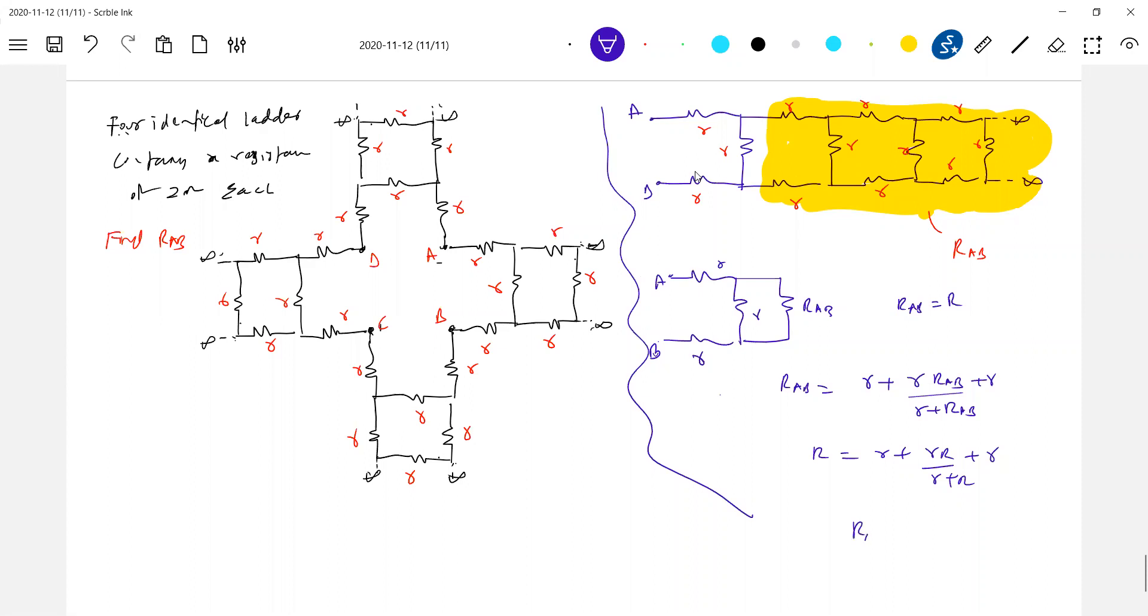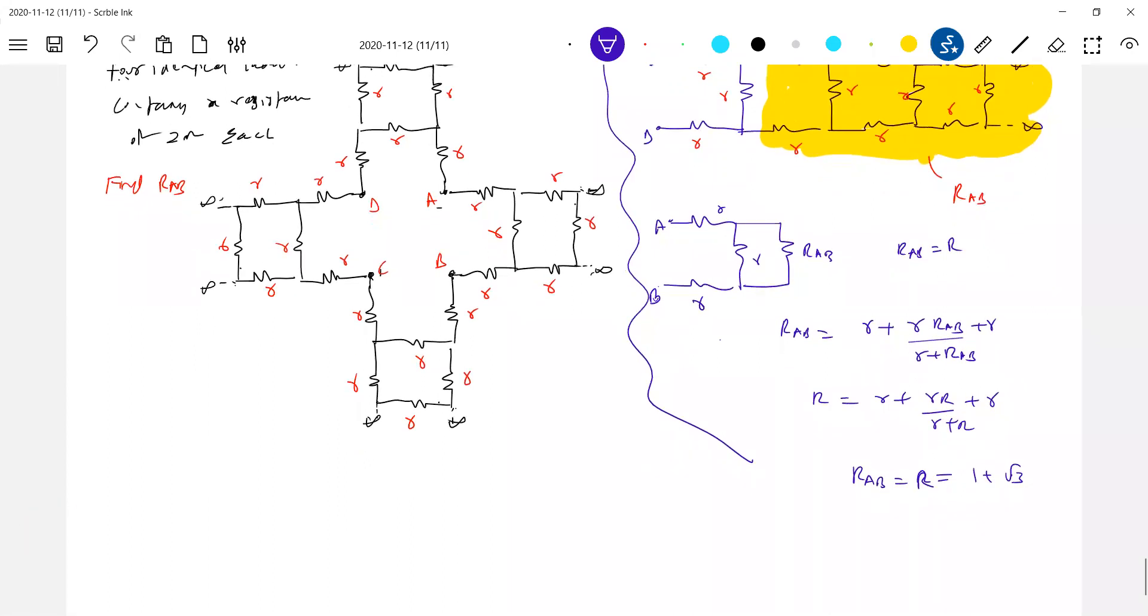After solving, we get R equals 1 plus root 3 times r. So your circuit has now become like this.